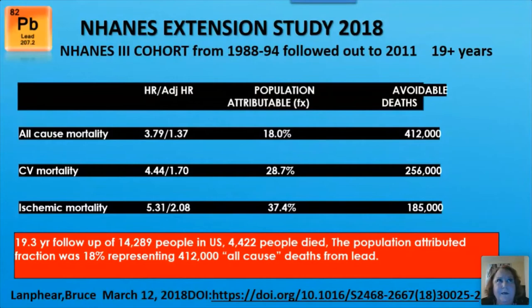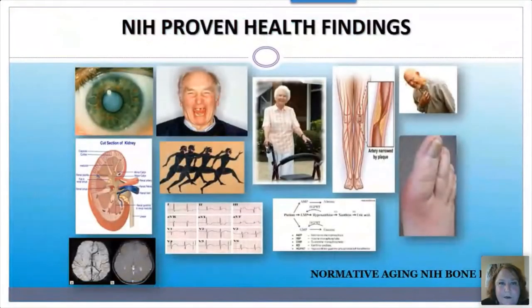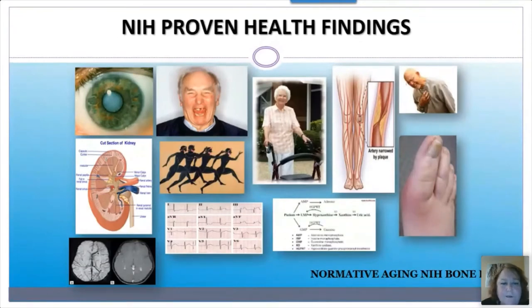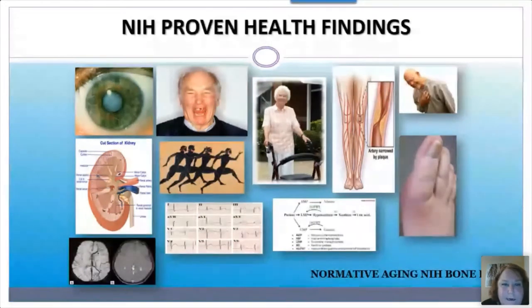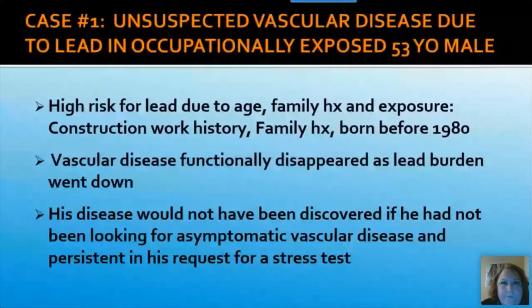The NIH Normative Aging studies using bone lead density measurements found elevated lead in the top tertile was associated with 44% more cataracts, tooth loss, osteoporosis, PVD, CAD, gout, brain shrinkage on MRI, renal insufficiency, and reduced walking speed — among 10 other parameters, across hundreds of published studies over 20 years.